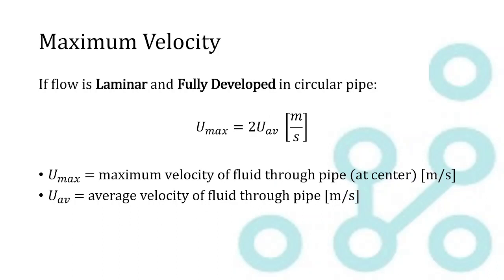And then the maximum velocity, really simple. Again, for the same premise, laminar and fully developed flow in a circular pipe, maximum velocity is double the average velocity. Units are the same, meters per second, and the maximum velocity is going to be right at the center line in your pipe.